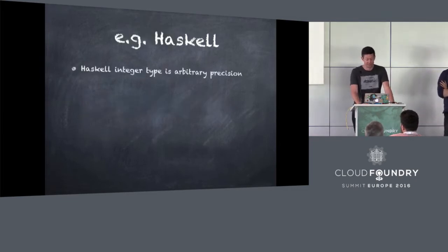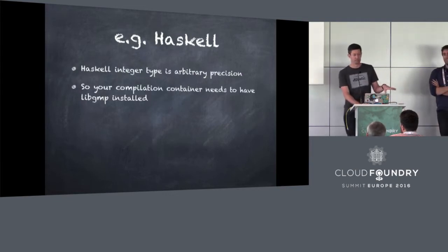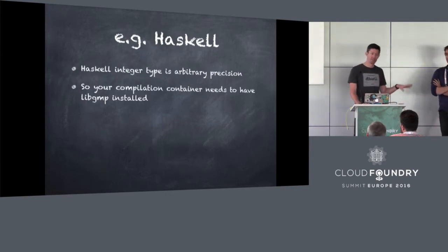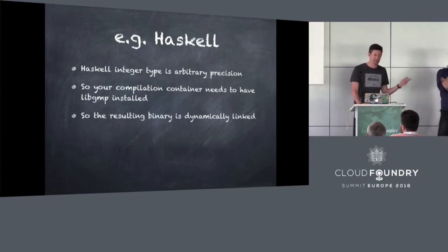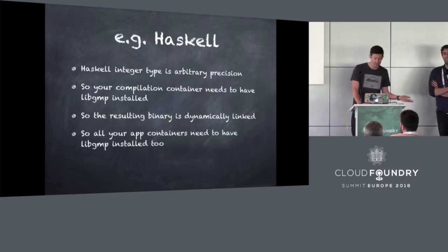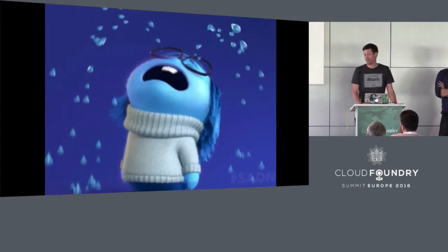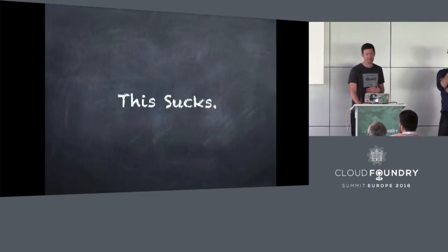Haskell's integer type is arbitrary precision. That means you need libgmp installed in the compilation container, and then the binary that you get is dynamically linked to that, so you need libgmp in your runtime container as well. And libgmp isn't in the rootfs, so it's not much fun.